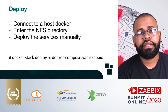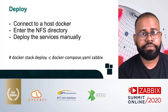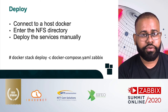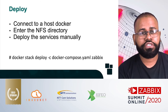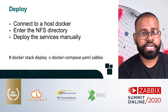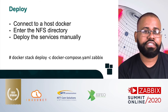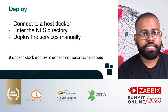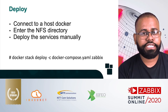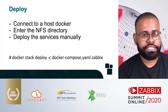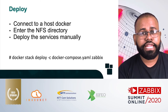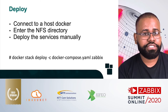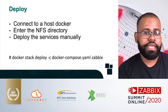Now that we know how to set each service, let's talk about the deploy. Until now, the deploy has been done manually. We need to connect to one of the servers with Docker Swarm manager role and access the directory shared by NFS. We run the command: docker stack deploy -c docker-compose.yaml zabbix. The -c flag defines the compose file name, and zabbix is the name of the stack. You can choose, for example, zabbix_prod or zabbix_dev.